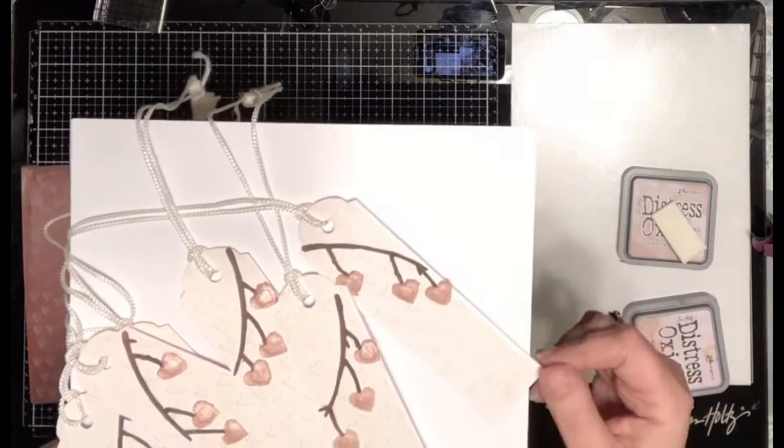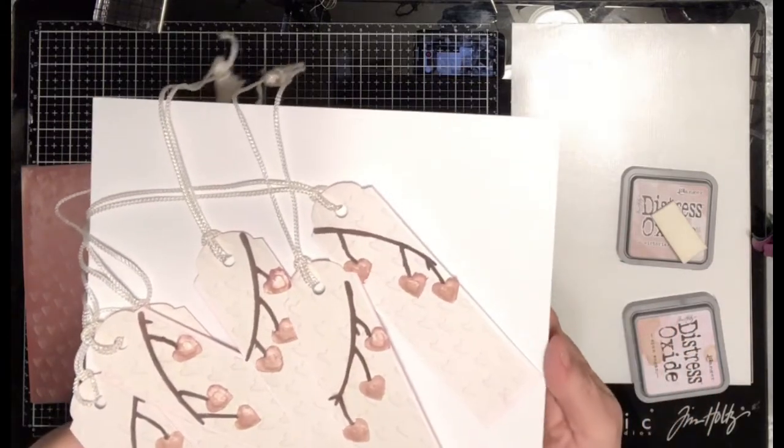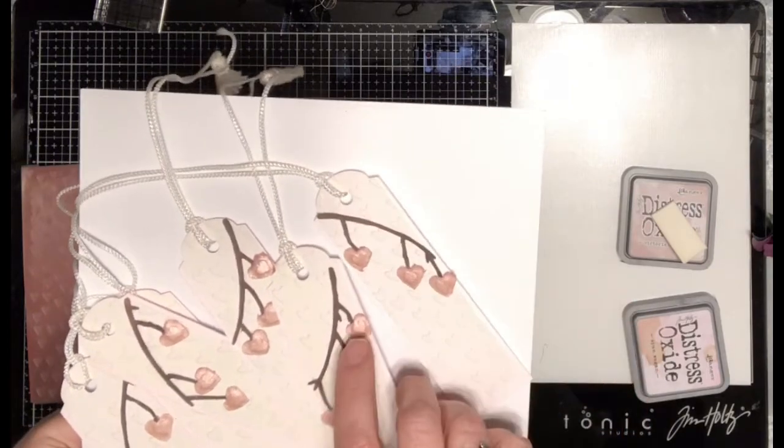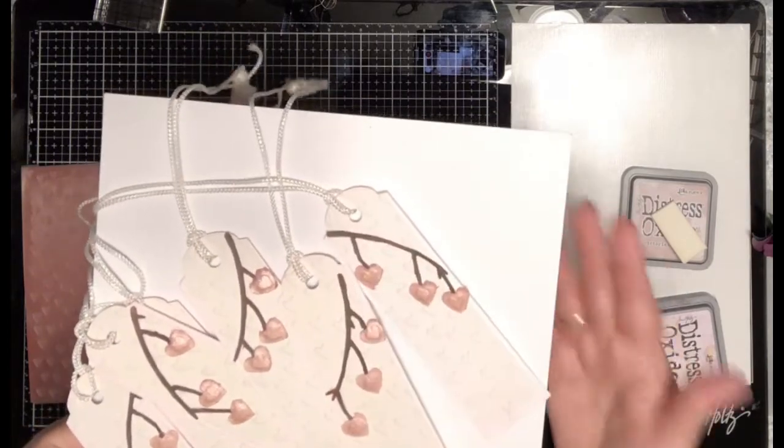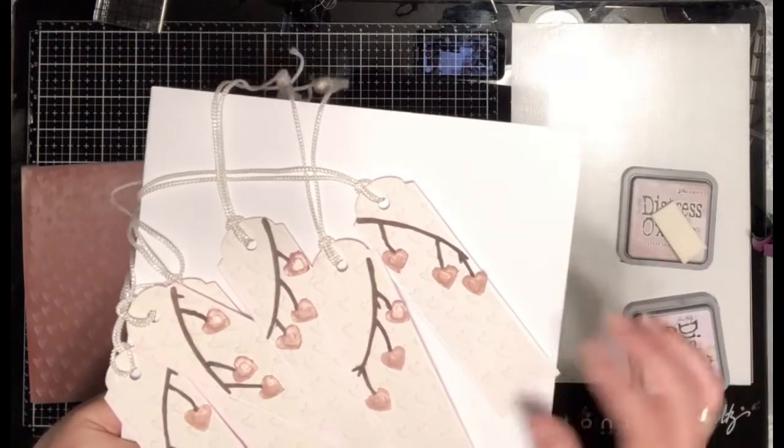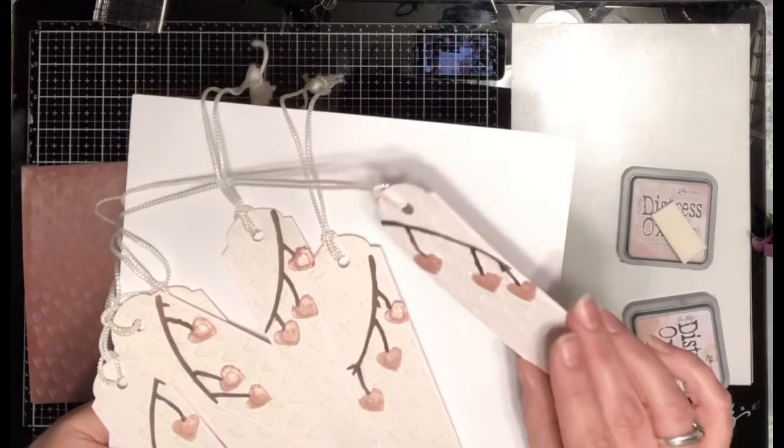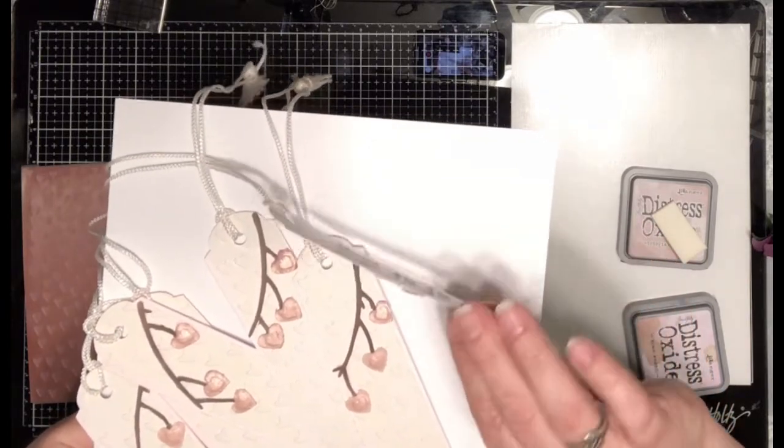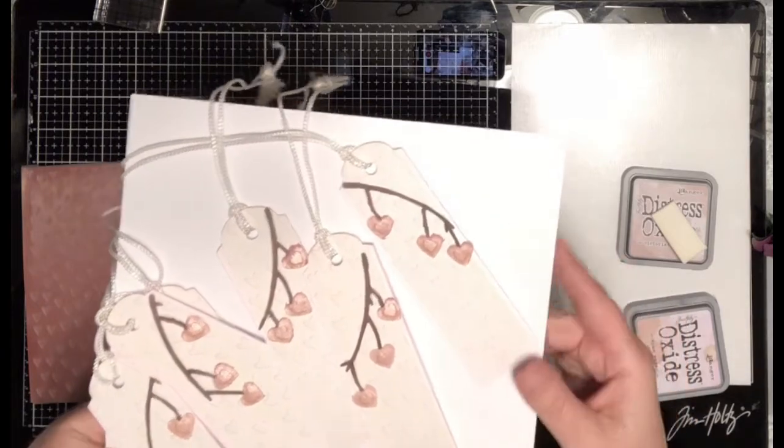I think it looks just fine. I'm so picky about my stuff but I wanted it to be flat enough to put in a book, otherwise I would have just put more dimension on it. I did put a little bit. I used my Art Glitter glue to hold the branch down but then I put a little bit of foam behind those hearts to pop them up a little bit.